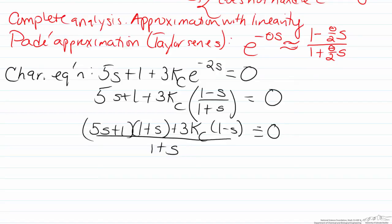and we will divide this by 1 plus s. When we move the 1 plus s to the right hand side it will go away. So when we factor out the two terms here we have 5s plus 1 times 1 plus s,